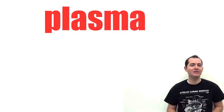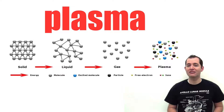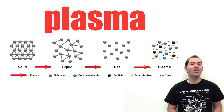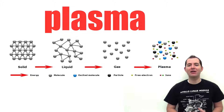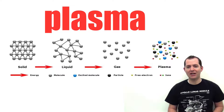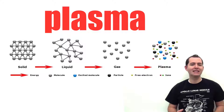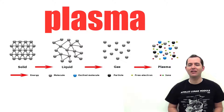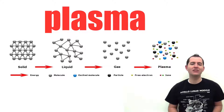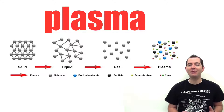A plasma is one of the four states of matter, the others being solids, liquids, and gases. In a plasma, all molecular bonds have been disassociated or broken apart. A plasma is characterized by a large number of ions, which are electrically charged atoms or groups of atoms. They can be positive or negative.